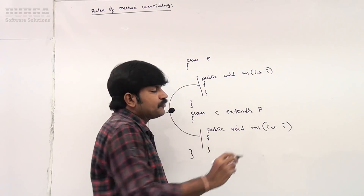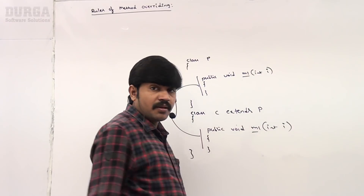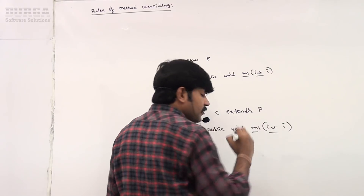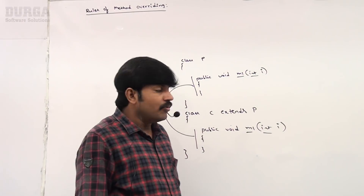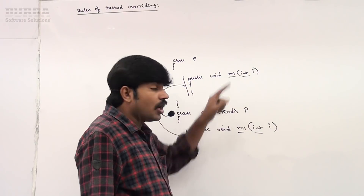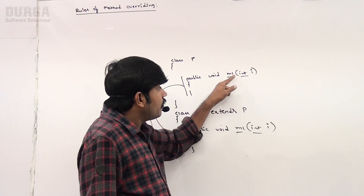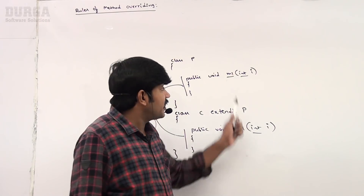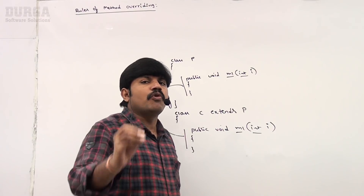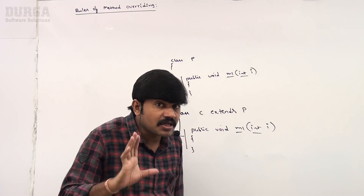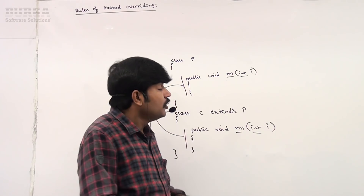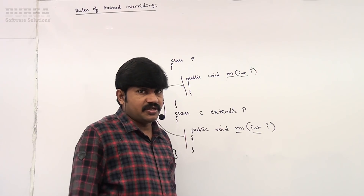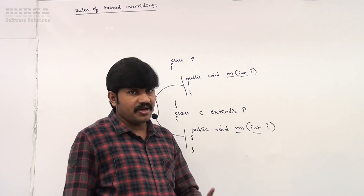So in overriding, method names must be same and argument types must be same — including order. Method name plus argument types is nothing but the method signature. So in overriding, method signatures must be matched. This is rule number one.